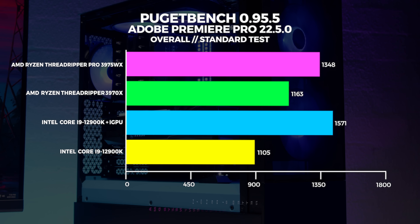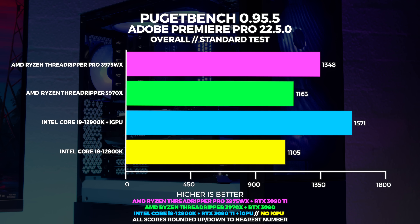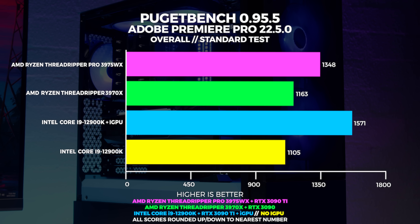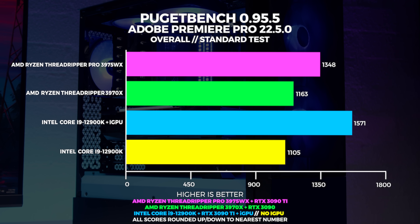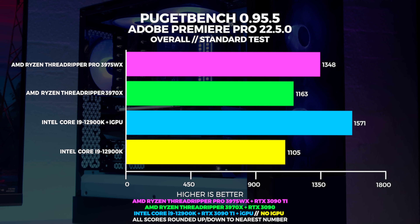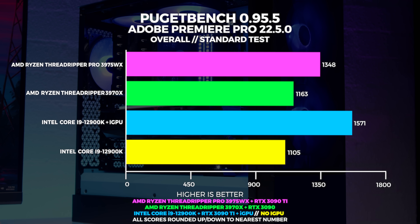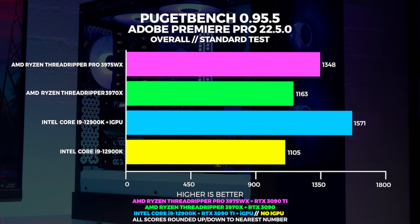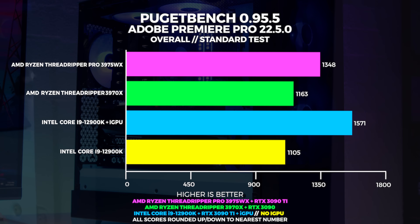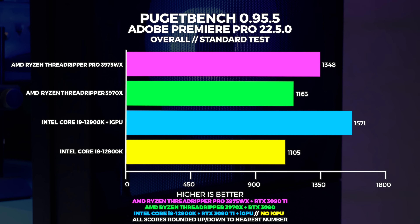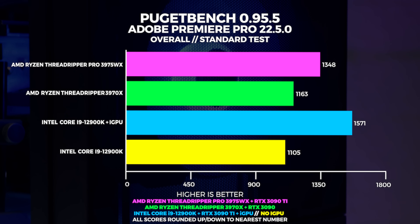Overall Premiere Pro performance. This graph is not divided by 10 — these are the whole numbers. Surprisingly, the 12900K with iGPU system is the fastest out of the lineup.